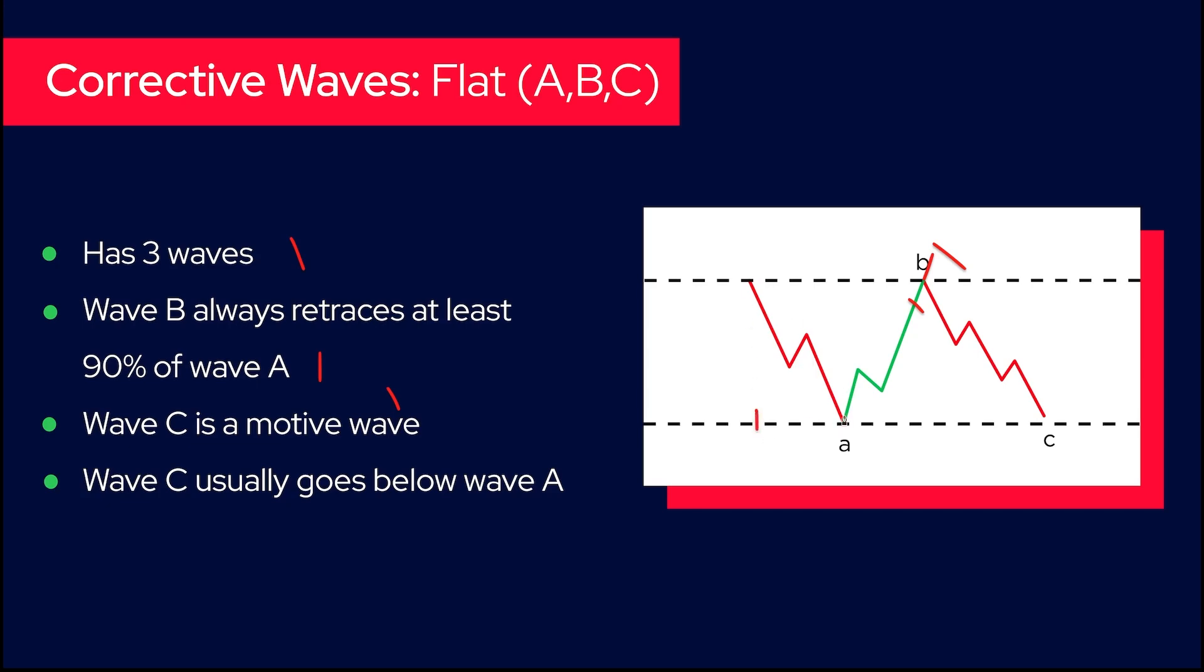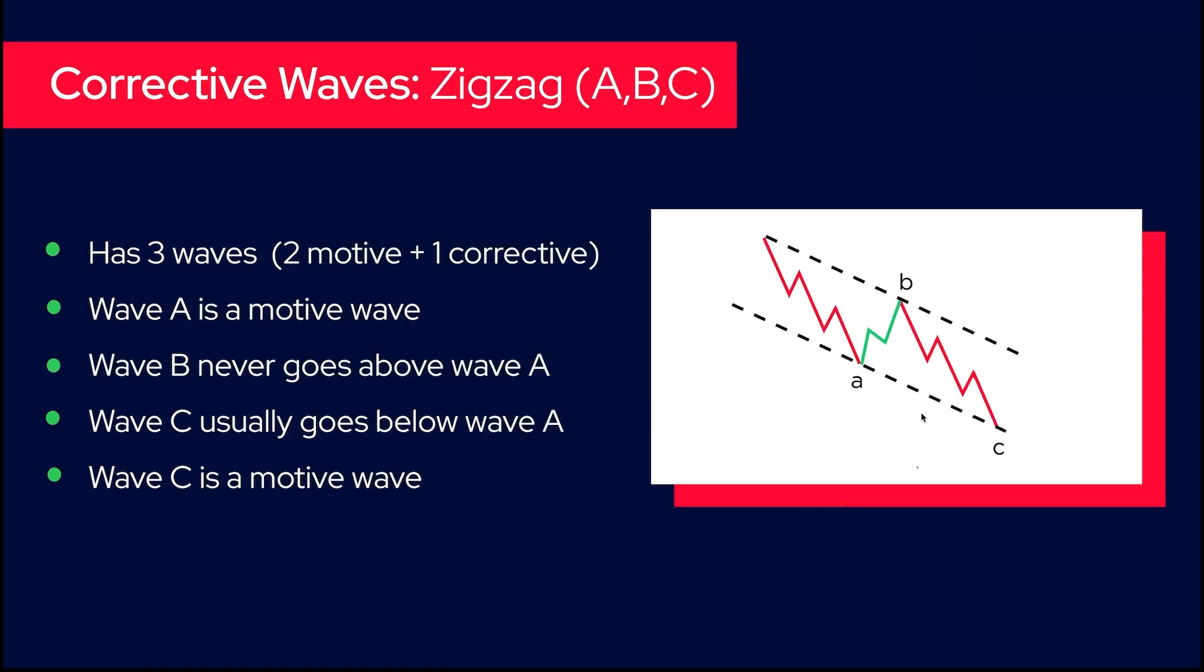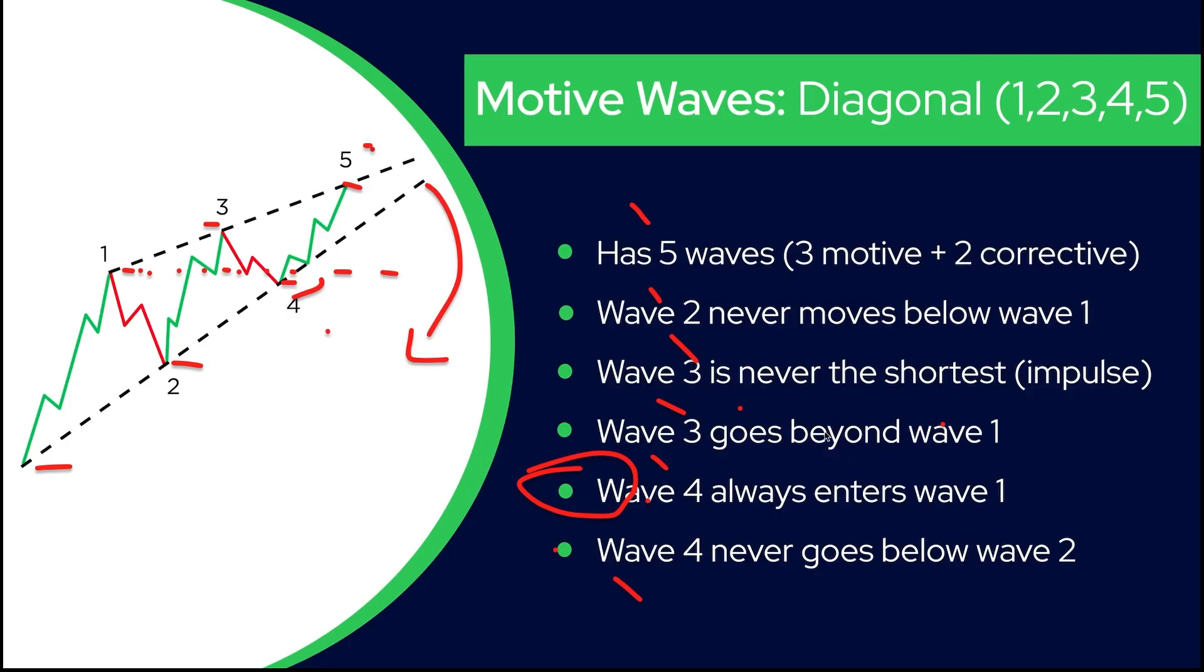Wave C is a motive wave. In my example the time is the same, but usually C waves can last much longer. They are motive waves and they can go slightly below or slightly above. What is very interesting to notice with this, from my experience, is we have one more corrective wave that we haven't seen which is triangle.